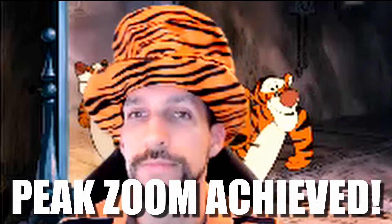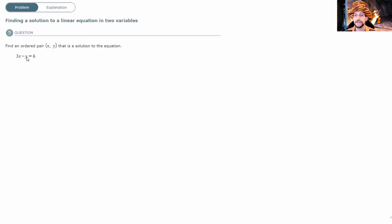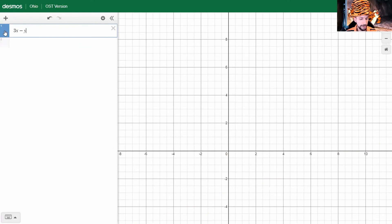Show me another one. 3x minus y equals 6. 3x minus y equals 6. Boom, point. 2, 0. Solution. Done. It's over.